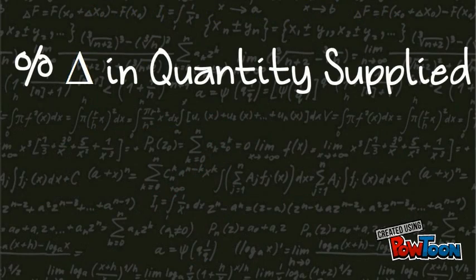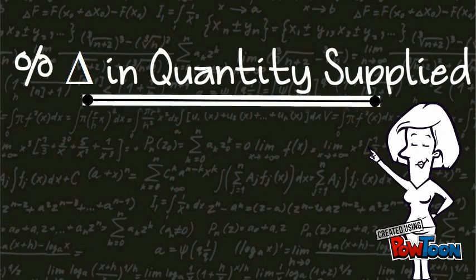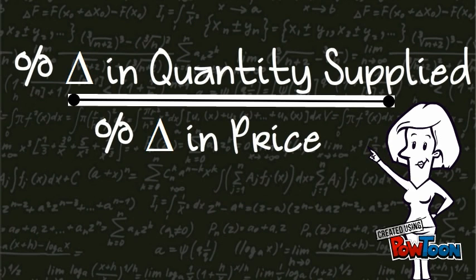The formula is the percent change in quantity supplied divided by the percent change in price.